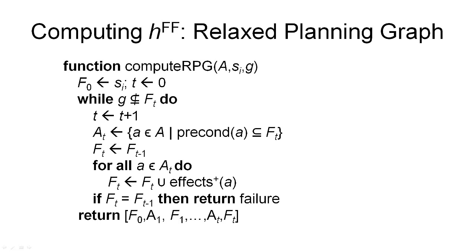Here is the pseudocode that performs the forward chaining and computes the relaxed planning graph. This is defined by a function compute_rpg — for relaxed planning graph — that takes as input a planning problem, already the relaxed planning problem. The first thing we do is initialization: we start with a set of fluents that are state propositions holding in the initial state, and an index t that tells us where in our planning graph we are. This is followed by a loop that extends our planning graph with one action layer and one proposition layer at a time. In each iteration, we increase the layer index, then compute the next action layer consisting of all actions whose preconditions are satisfied in the preceding proposition layer.